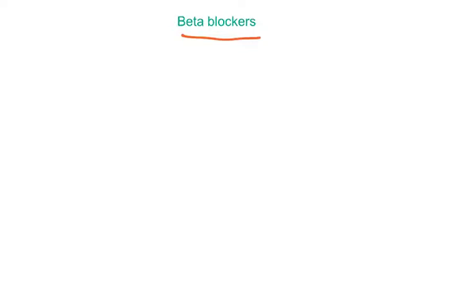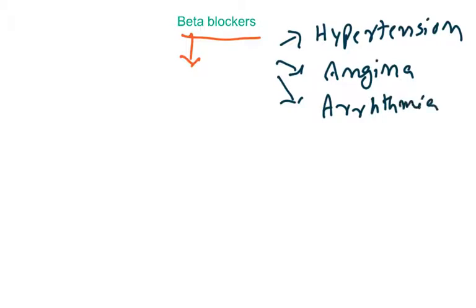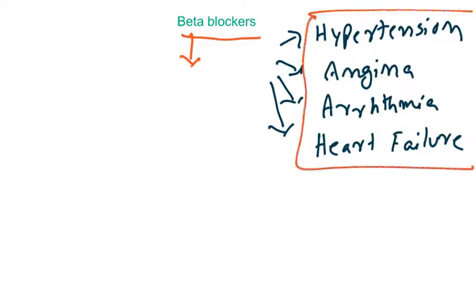Now in this part we will see beta blockers. Beta adrenergic blockers are a very popular group. The reason is they are used to treat hypertension, angina pectoris, heart failure, and arrhythmia. You can see the importance of this class — they can be used to treat the majority of cardiac diseases.